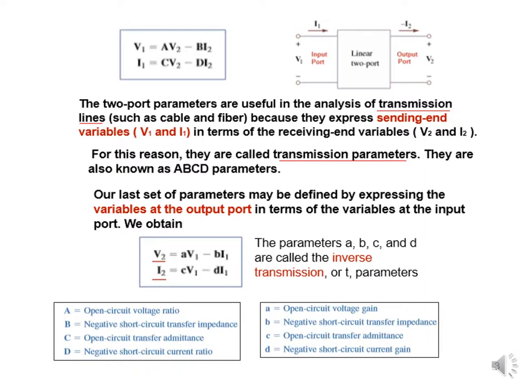For parameter A, it is V1 over V2 — a ratio of voltages — so it has no unit; it's a kind of gain. For parameter B, it is V1 divided by I2, which is voltage divided by current, so its unit is ohms (impedance). For parameter C, it is current divided by voltage, which is admittance, so its unit is siemens. For parameter D, it is current divided by current, so it also has no unit.